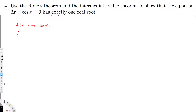First, I take the value zero. f(0) = 2 times 0 plus cos 0. Cos 0 is 1 and 2 times 0 is 0, so f(0) = 1, which is above zero. So f(0) > 0.